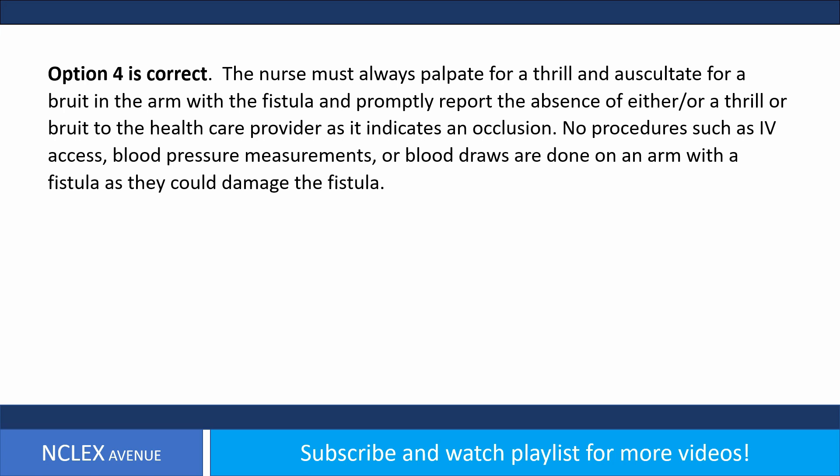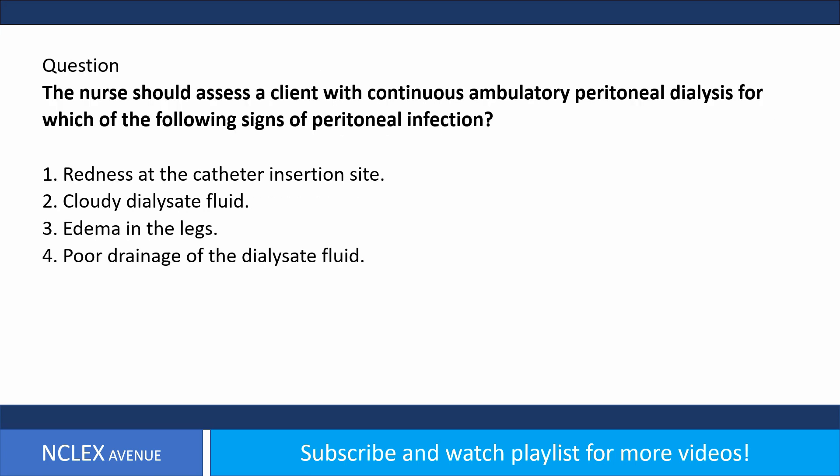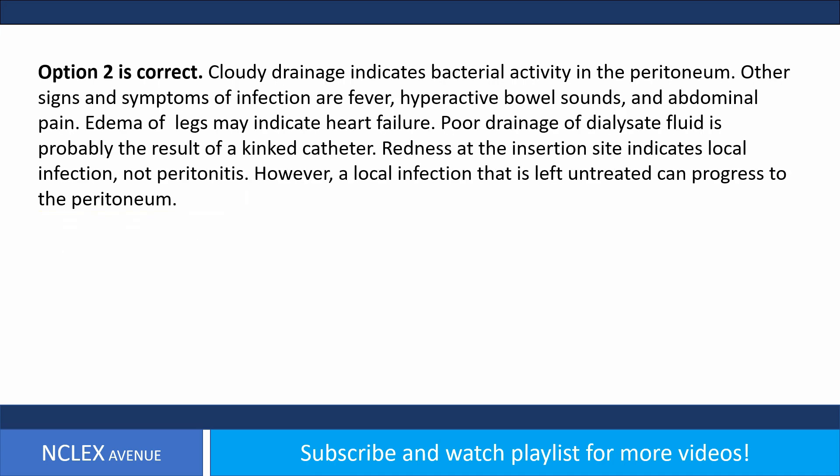The nurse should assess a client with continuous ambulatory peritoneal dialysis for which of the following signs of peritoneal infection: one, redness at the catheter insertion site; two, cloudy dialysate fluid; three, edema in the legs; four, poor drainage of the dialysate fluid. Answer: option two is correct. Cloudy drainage indicates bacterial activity in the peritoneum.